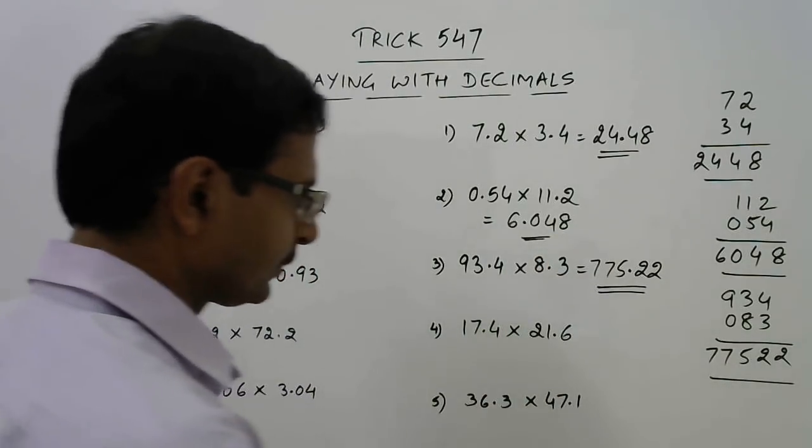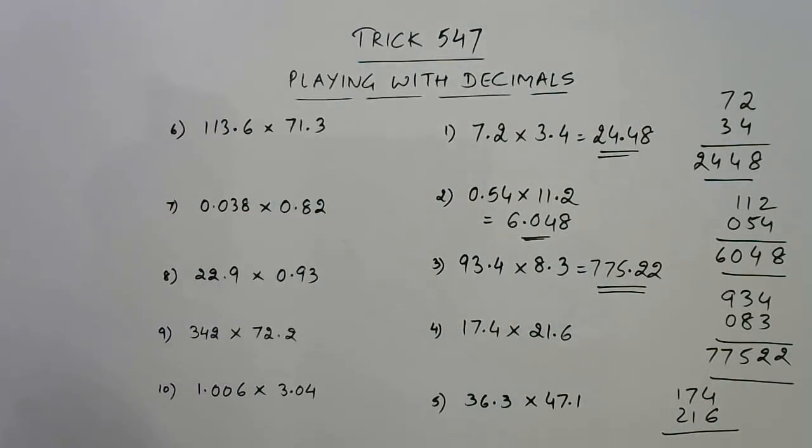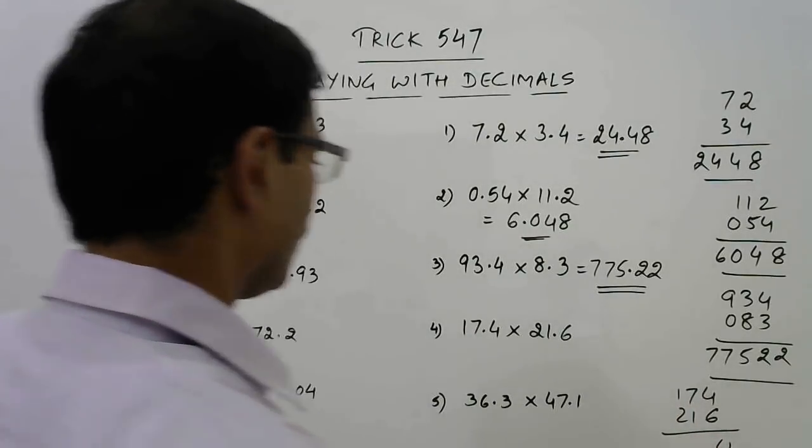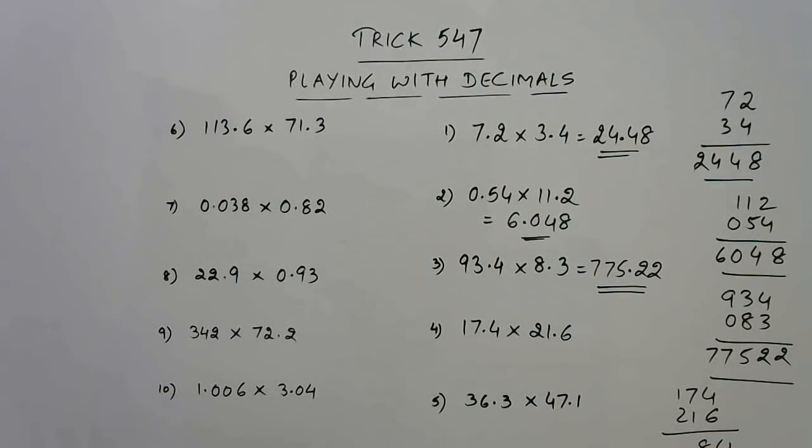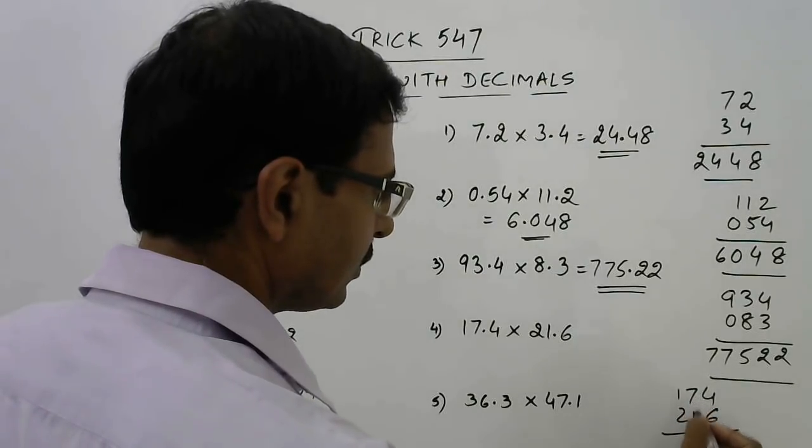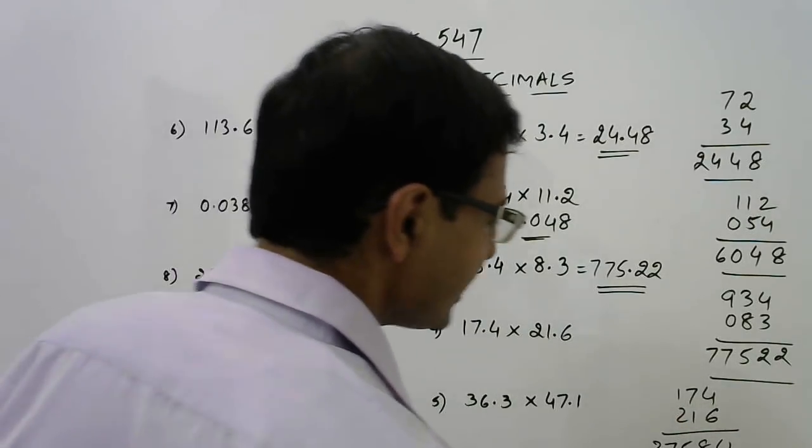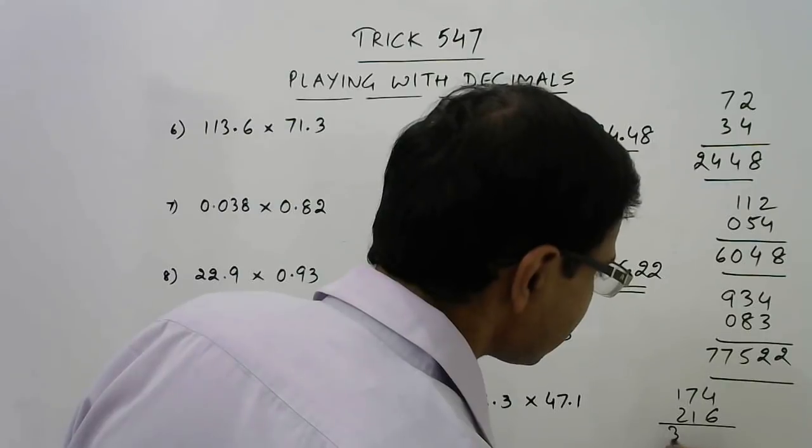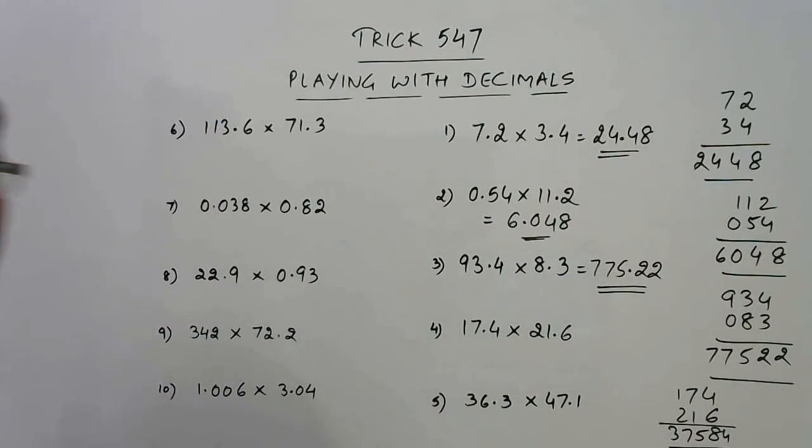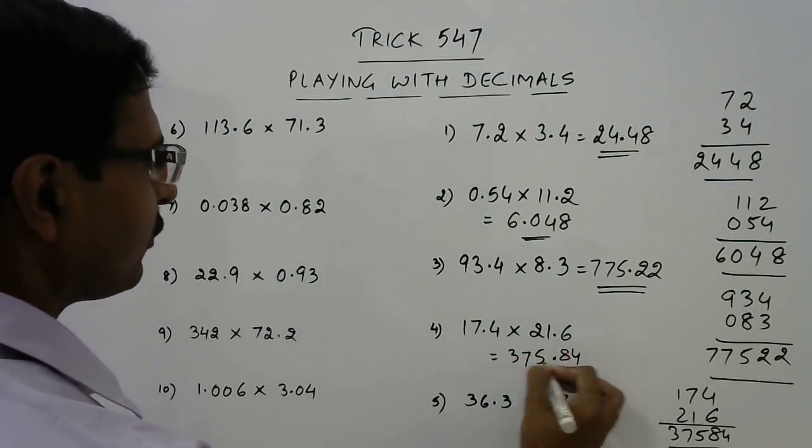Let's have the fourth one. This is three digit number, three digit number. So 174 and 216. Now, a three digit multiplied by a three digit number. Using the method step by step, 37584 is the product of these two numbers. We can put the decimal 1, 2, so 375.84 is the required product.